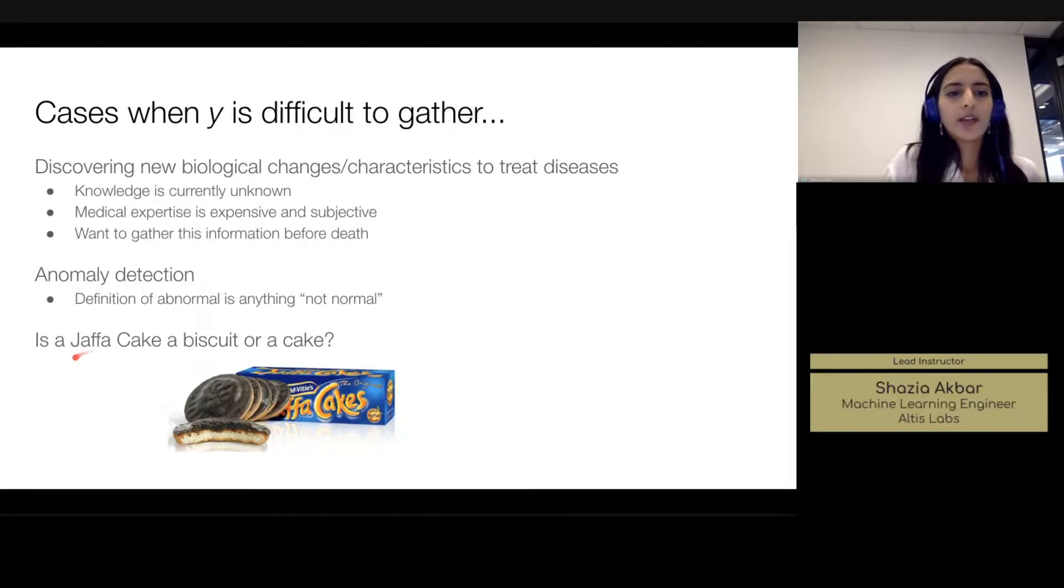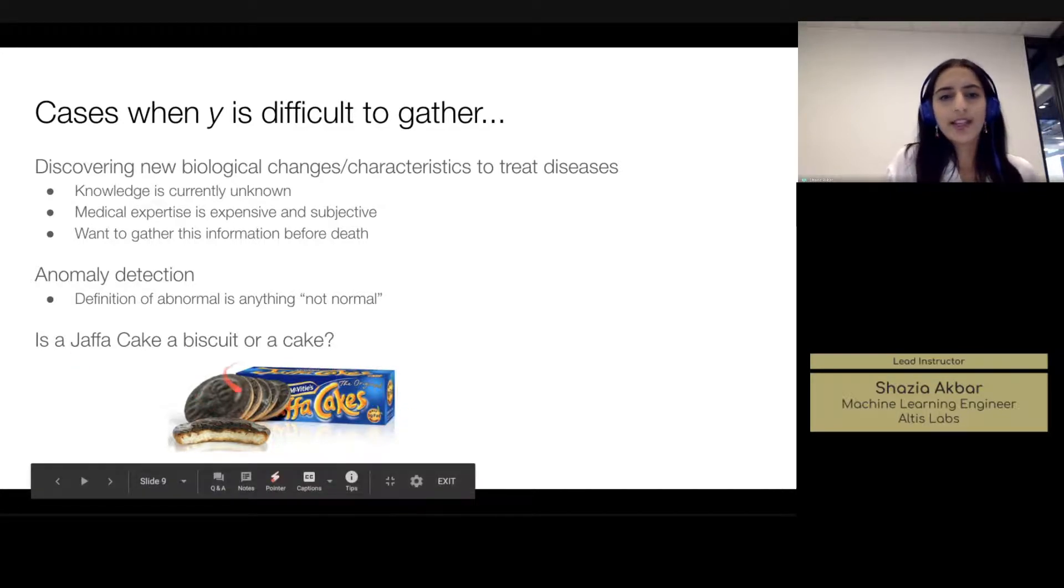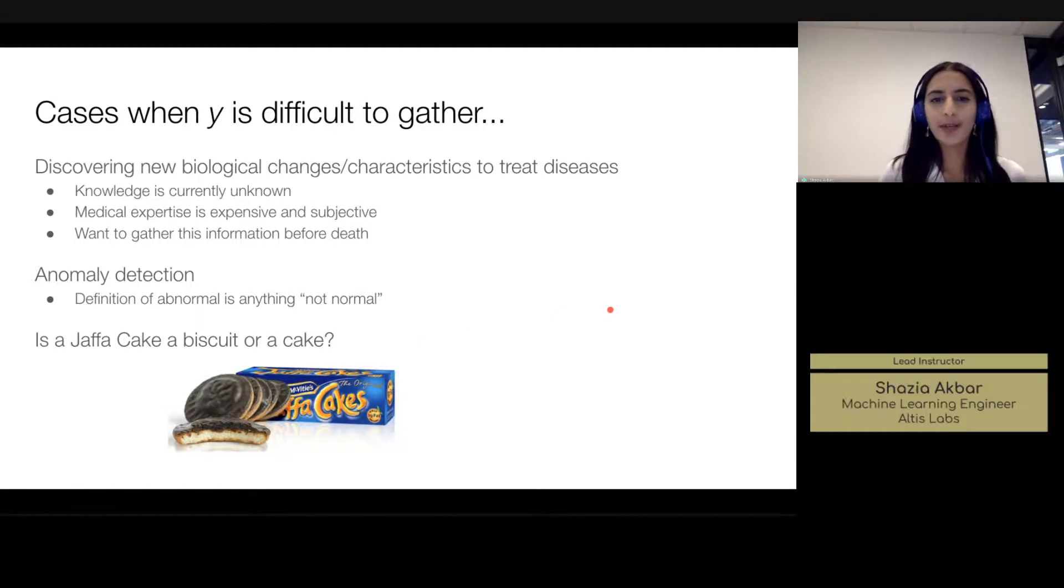And also even in simple examples where we're working with say images of scenes, we often have, when we label something, we can label them differently depending on where we are in parts of the world, depending on your lingo, depending on your style of speaking. And so this is a really nice example here, is a Jaffa cake a biscuit or a cake? Some people would label it one or the other.